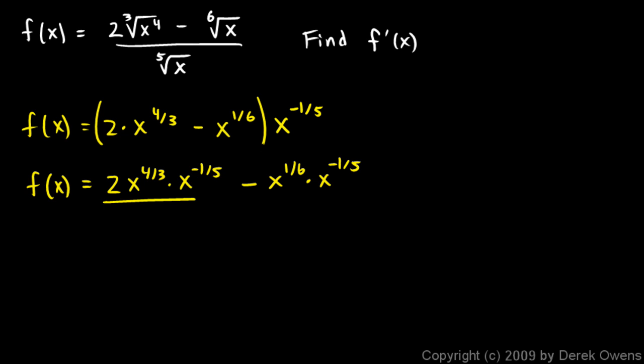Okay, over here in this first term, if I say f of x, and this is still the function, not the derivative, 2 x to the 4 thirds times x to the negative 1 fifth. If I multiply these two exponents together with the same base, I have to add the exponents. So I need to add 4 thirds and negative 1 fifth. And that's going to be, let's see, 4 thirds is 20 fifteenths and negative 3 fifteenths. That's going to give me 17 fifteenths.